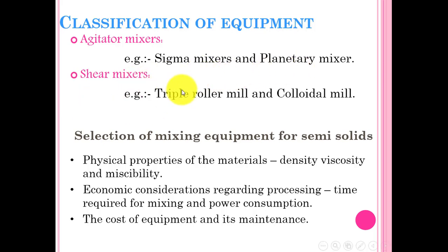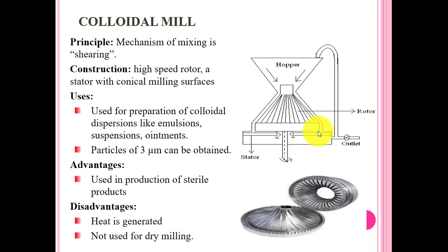Another type of equipment is the triple roller mill and the colloidal mill. The triple roller mill was explained in previous lectures; the colloidal mill will be explained in this lecture. Selection of equipment for semi-solids depends on many factors: physical and chemical properties of the material, density, viscosity, and also economic considerations. Time is very important for mixing because more time consumption increases cost. Maintenance is also an important factor. The most important factors are density and viscosity.